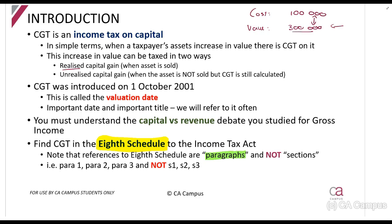At the CTA level you will also encounter unrealized capital gains. These are situations where the value has increased to R300,000 but you don't actually sell the asset, yet you still get taxed on that R200,000 increase in value.